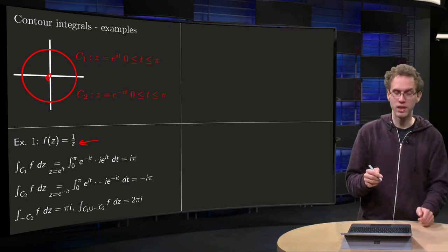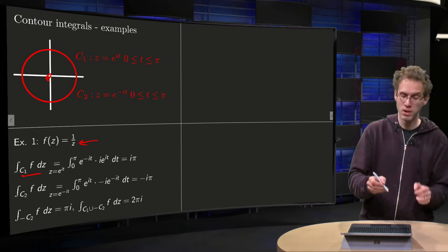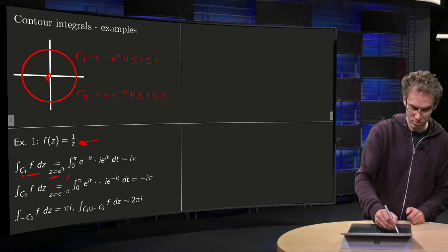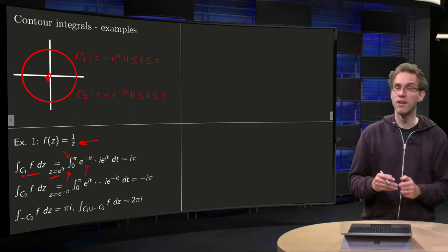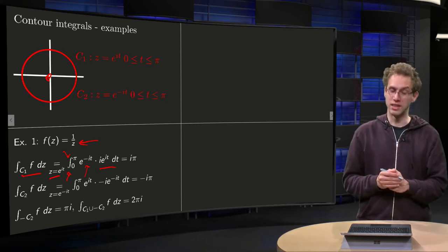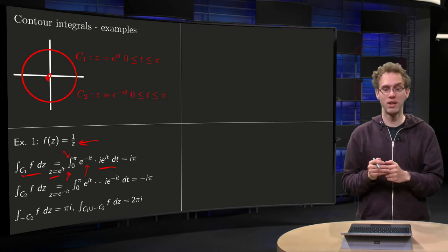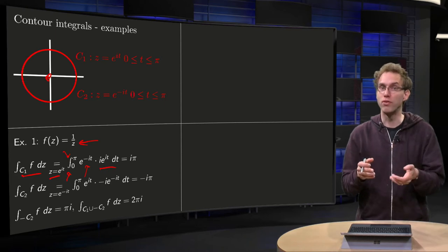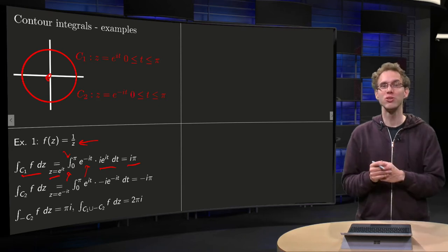So we compute the integral along c1, f of z. What do we need to do? We have to plug in the parameterization, z equals e to the power i t, that t runs from 0 to pi. The 1 over z becomes e to the power minus i t, and dz becomes i times e to the power i t dt. And that's really nice because the e to the power minus i t and e to the power i t cancel out. So we just have the integral of i with respect to t, so we have a constant, so it just yields i times pi. Very nice function to start with.